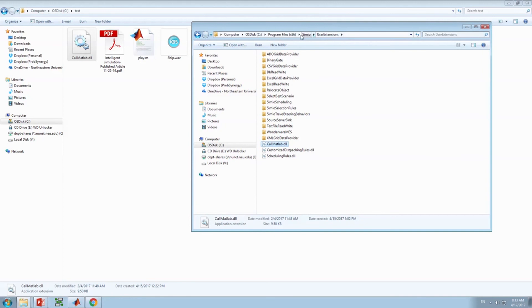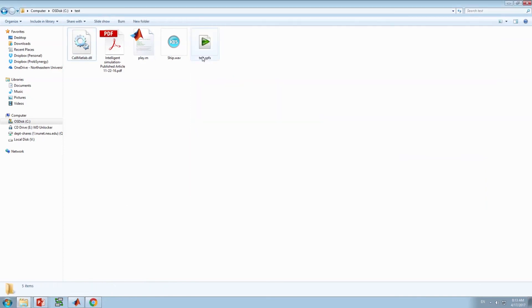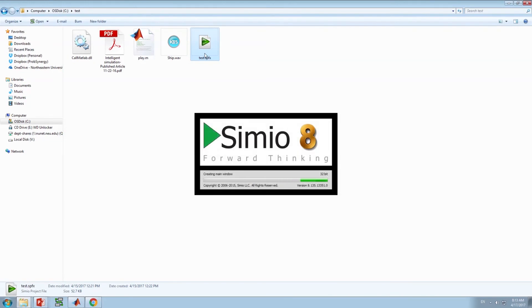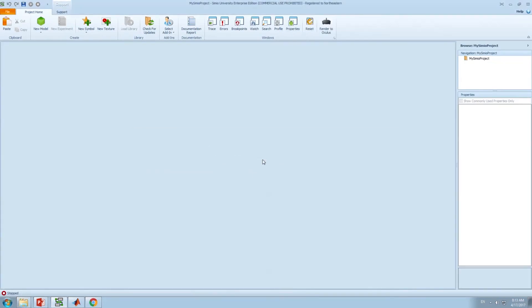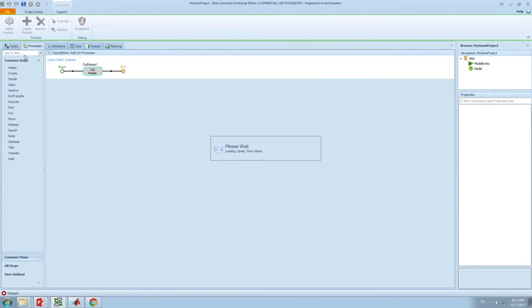So, once this file is added to the User Extensions folder of Simio, you can open Simio and see that a new step instance is added to the software.